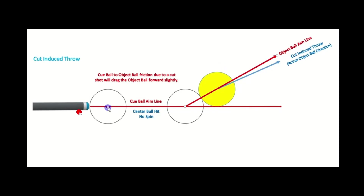Now we're going to discuss the graph of a 30-degree cut. Cut-induced throw is always involved in a 30-degree cut, but we are also going to add spin to the equation.